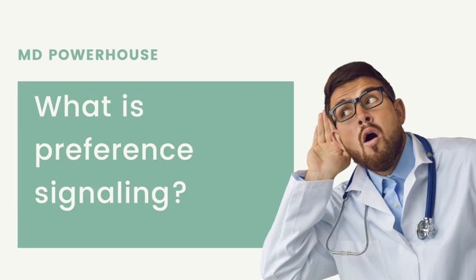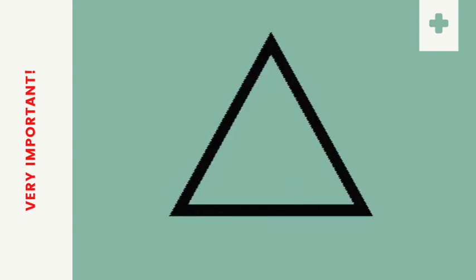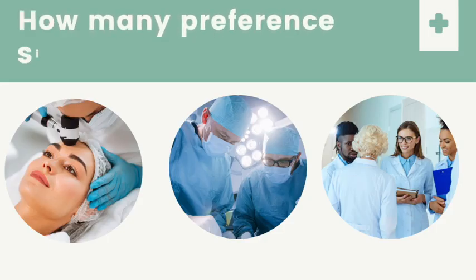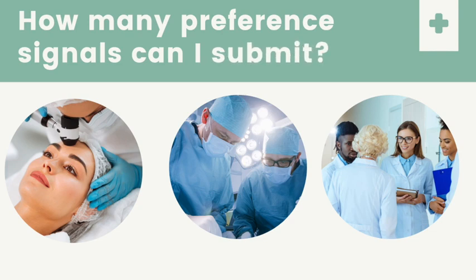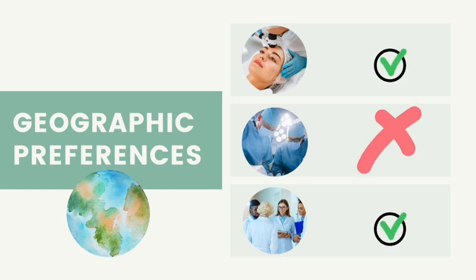How many preference signals can you submit? This depends on which specialty or specialties you are applying to. For dermatology, you can signal three programs. For general surgery and internal medicine, you can signal up to five programs. Another key feature of the new supplemental application is that it includes the option for applicants to mention geographic preferences. However, it is crucial to know that for general surgery, geographic information will not be shared with those programs — so only dermatology and internal medicine applicants can share geographic preferences.